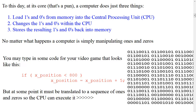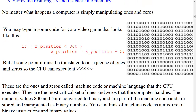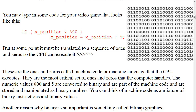You may type in some code for your video game that looks like this: if x-position is less than 800, then x-position equals x-position plus 5. But at some point, that code must be translated to a sequence of ones and zeros so the CPU can execute it. These ones and zeros are called machine code, or machine language. They are the most critical set of ones and zeros the computer handles. The numeric values 800 and 5 are converted to binary and stored and manipulated as binary numbers.